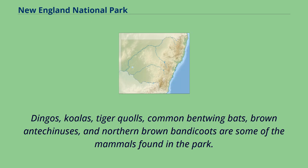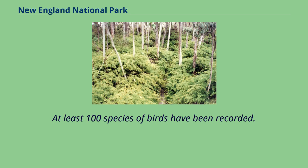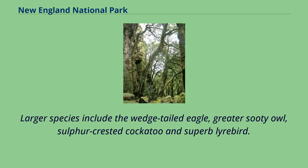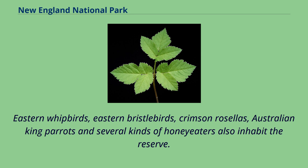Dingoes, koalas, tiger quolls, common bentwing bats, brown antechinuses and northern brown bandicoots are some of the mammals found in the park. At least 100 species of birds have been recorded. Larger species include the wedge-tailed eagle, greater sooty owl, sulphur-crested cockatoo and superb lyrebird. Eastern whipbirds, eastern bristlebirds, crimson rosellas, Australian king parrots and several kinds of honeyeaters also inhabit the reserve.